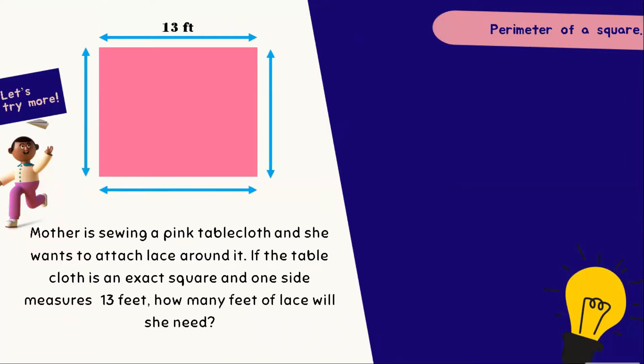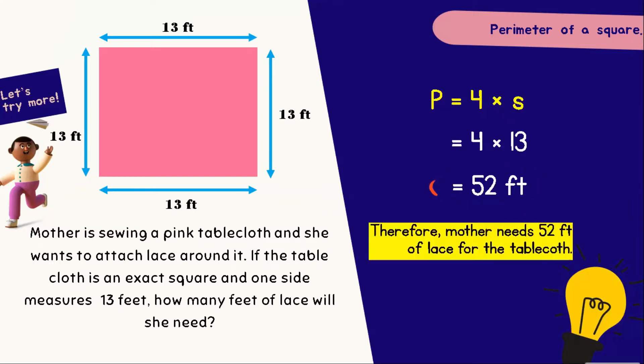And since that a square has 4 equal sides, we can conclude that the perimeter of a square is equal to 4 times S, where S stands for sides. Let's now substitute our given formula by the data provided in our word problem. 4 times 13 is equal to 52 feet. Therefore, Mother needs 52 feet of lace for the tablecloth.